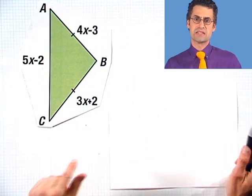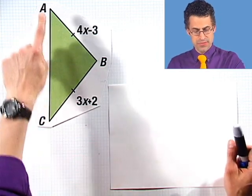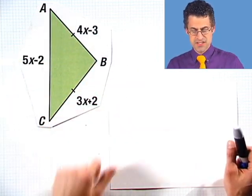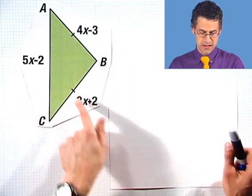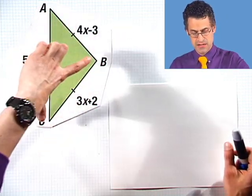We're given one more piece of information, namely that AB is congruent to BC. And you see it's been marked with this little mark, showing that this length is equal to that length.